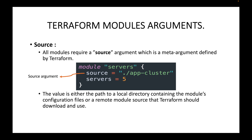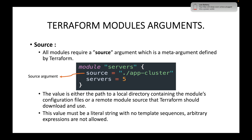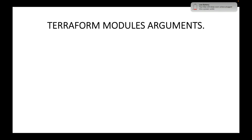The value is either the path to a local directory containing the module's configuration files, or a remote module source that Terraform should download and use. You can use a local module path or a published module — we will cover that in upcoming sessions. This value must be a literal string with no template sequences; arbitrary expressions are not allowed.